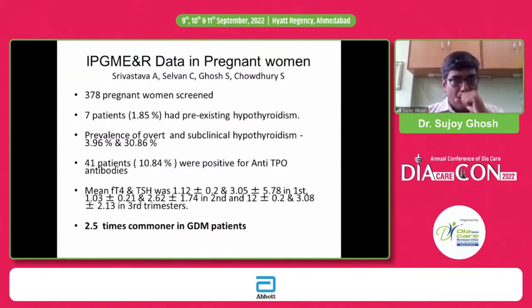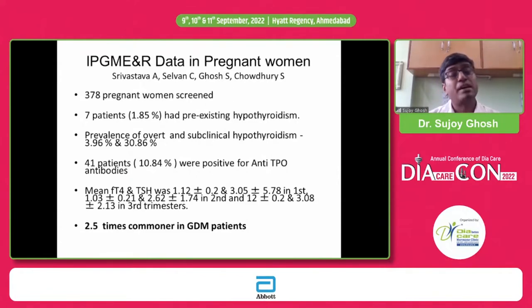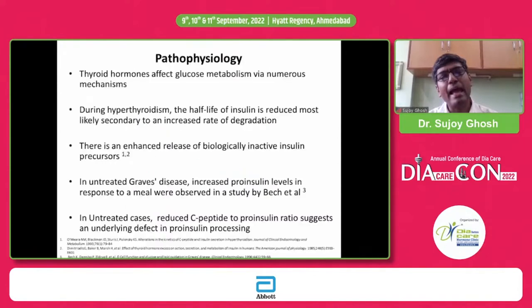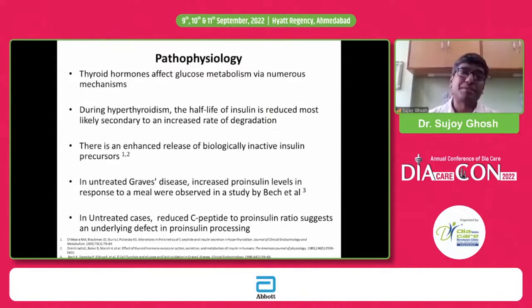If you look at pregnant women, thyroid dysfunction is of course much more common in GDM — it is two and a half times more common in people with GDM compared to those without. This graph shows the relationship, indicating a greater propensity of hypothyroidism rather than hyperthyroidism.